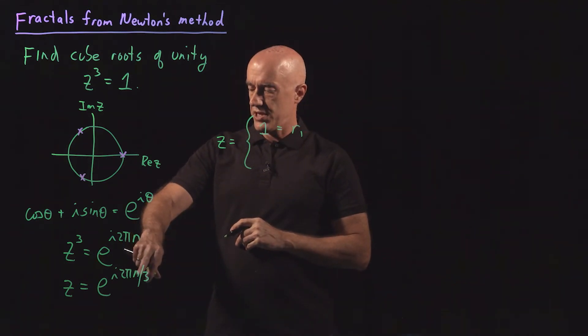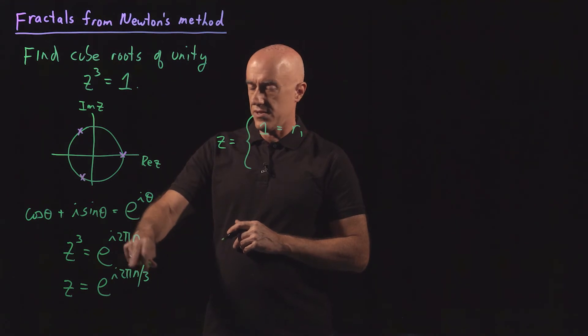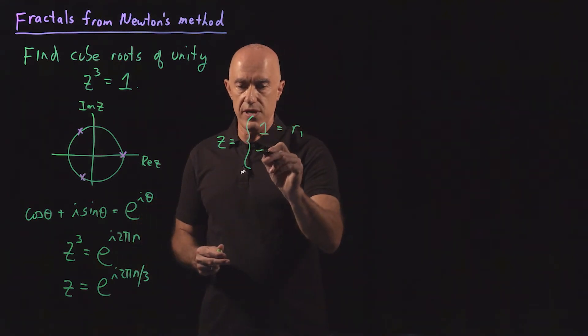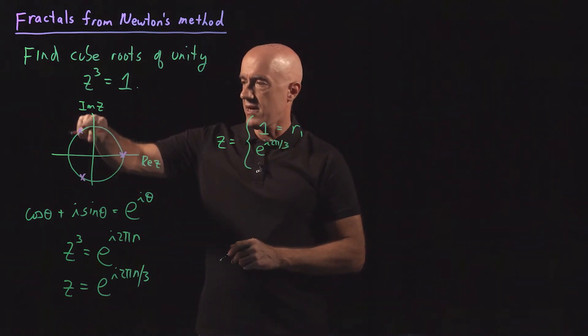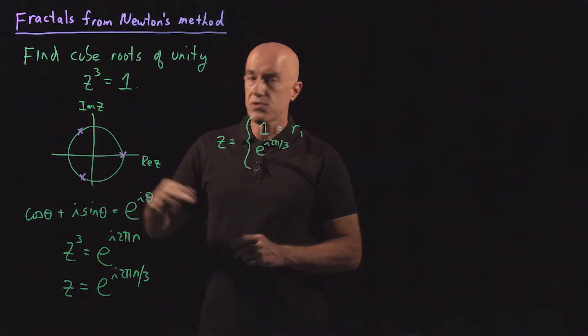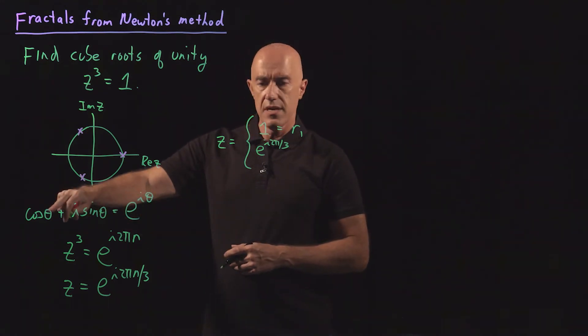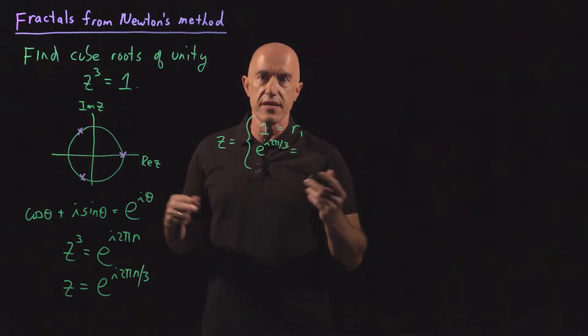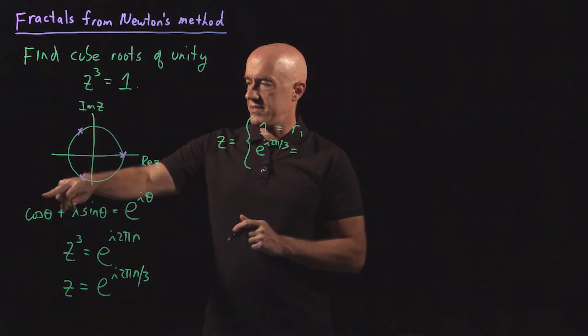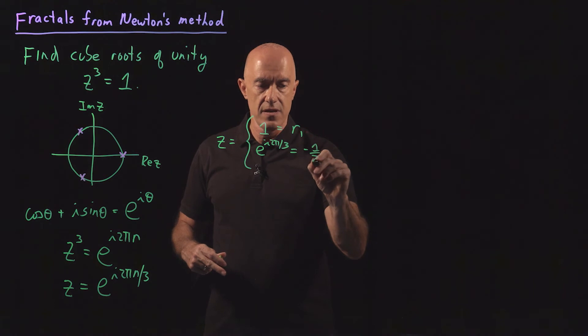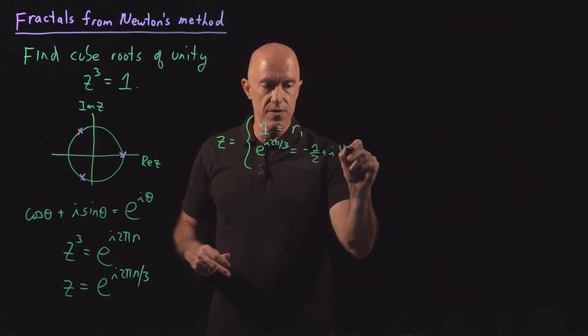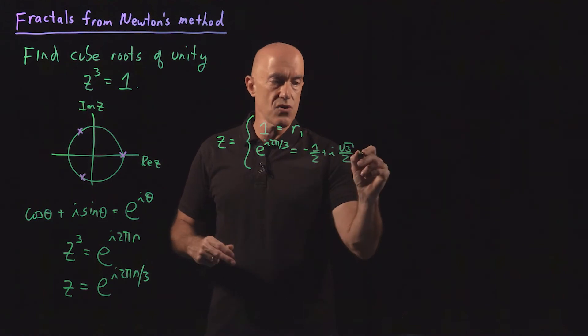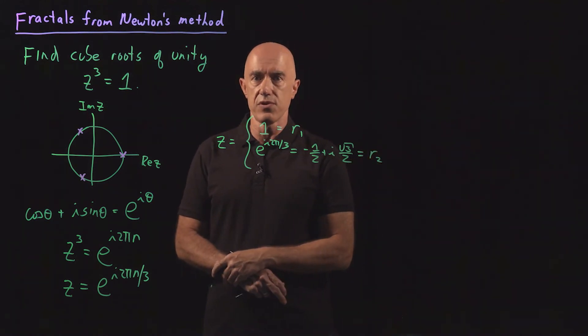The other solution is n equals 1, which is e to the i 2 pi over 3. That's this upper red cross. If you use Euler's formula, that's cosine 2 pi over 3 plus i sine 2 pi over 3. If you remember your trig identities, that would be minus 1 half plus i square root of 3 divided by 2, and I'll call that the second cube root of unity.